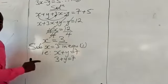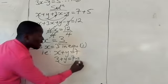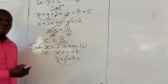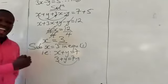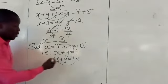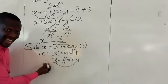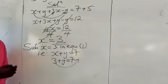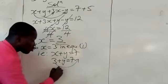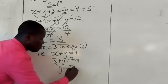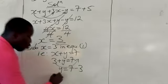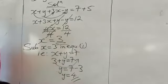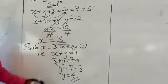In order to determine the value of y, we move the 3 over to the right-hand side. Moving the 3 over to the right, the positive 3 automatically changes to minus 3. So on the left side: y equals 7 minus 3. So y is equal to 7 minus 3, which is 4. We have now found the value of x and the value of y.